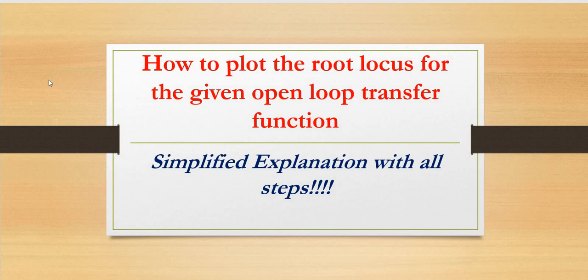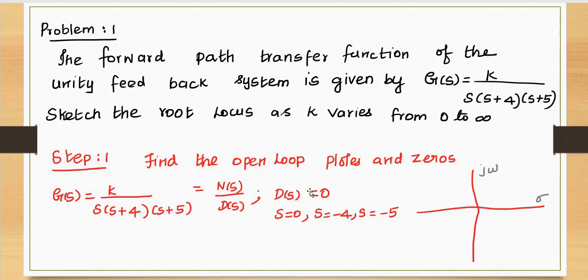Hi all. In this video, I am going to explain how to plot the root locus for the given open loop transfer function. Problem 1: The forward path transfer function of the unity feedback system is given by G(s) = K divided by s(s+4)(s+5). Sketch the root locus as k varies from 0 to infinity.